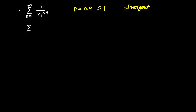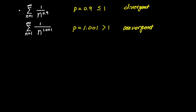Now let's consider the infinite sum of 1 over n to the power of 1.001. Upon close inspection, the value of p is 1.001, which is greater than 1. Therefore, this infinite series converges.